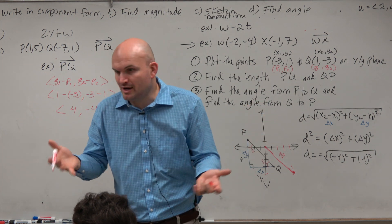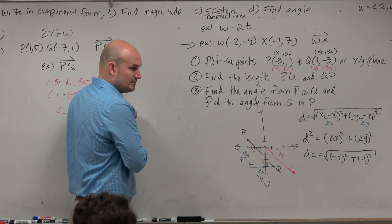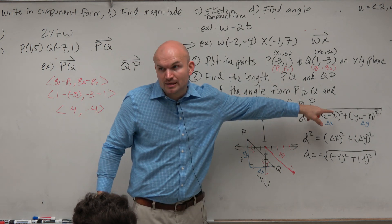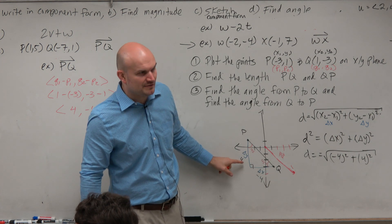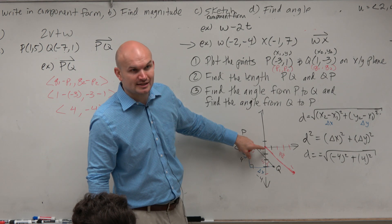Now you might say, why is that better? What is that helpful? Well, if I asked you to find the magnitude of this vector, yes, you could use the distance formula. Yes, you could create a triangle and use the Pythagorean theorem. But isn't it really easy to find the sides of a triangle when you're starting at the origin?